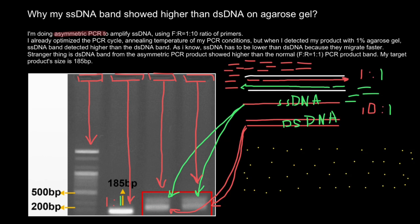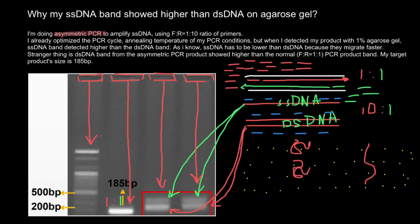Why does this happen? DNA moves through gel electrophoresis because it has negative charges along each backbone. Double-stranded DNA has two backbones, while single-stranded DNA has one. So the double-stranded DNA molecule actually has more negative charges than single-stranded DNA. But this is not the only explanation. Double-stranded DNA moves through the gel in a relatively straightforward way. Single-stranded DNA, however, can take different conformations — it can be self-complementary and form different shapes, which interfere with its movement through the gel.